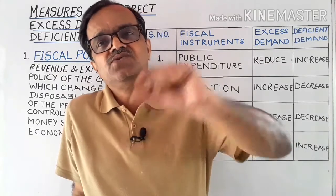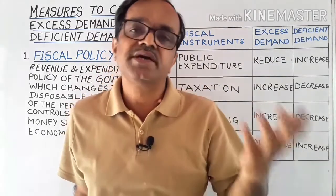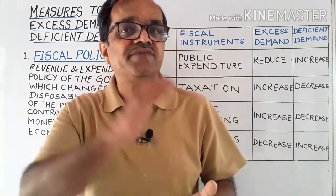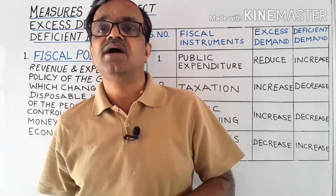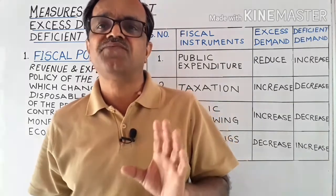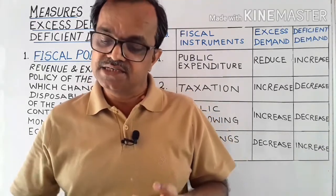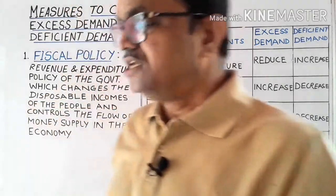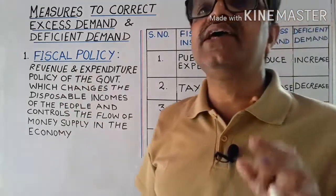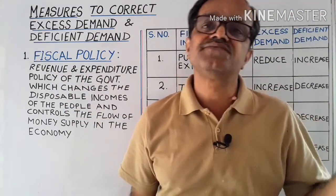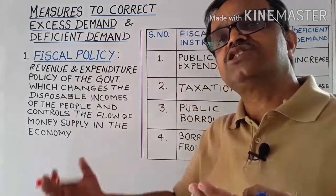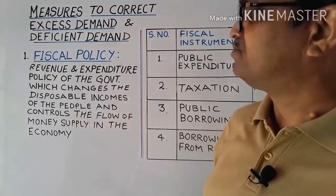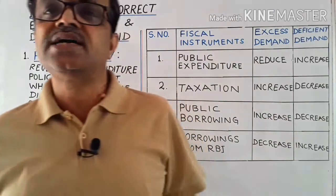There are two policy measures to correct the situations of excess demand and deficient demand. Number one is fiscal measures and number two is monetary policy measures. Fiscal policy simply means it is the revenue and expenditure policy of the government, which changes the disposable income of the people and accordingly controls the flow of money supply in the economy.